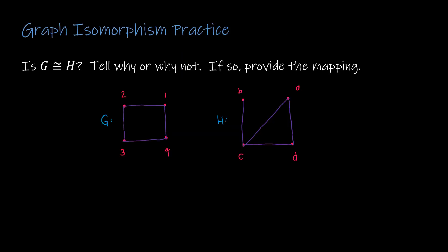Here's a practice problem: press pause and determine if G and H are isomorphic. There are four vertices and four edges in each, so it's possible. But when I look at the degree structure, G has each vertex with degree two. H has degrees of one, two, two, and three. Right away I can stop and say no, these are not isomorphic, because the degree structure is not the same.